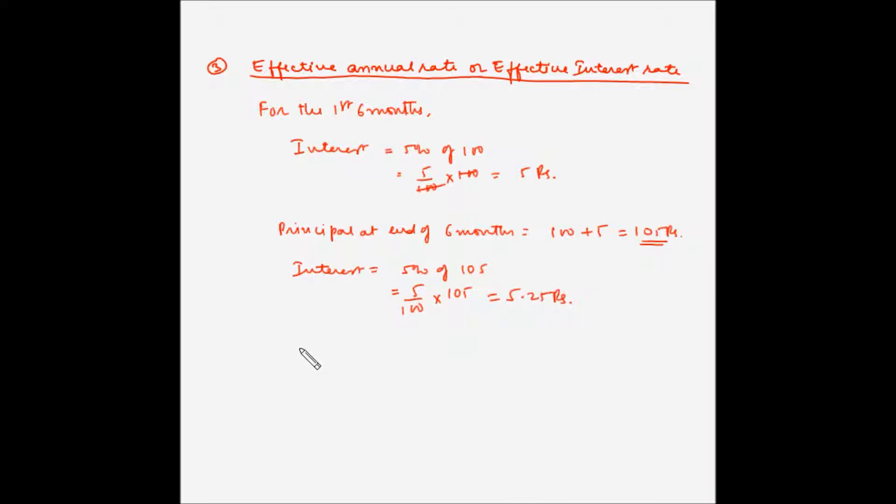So, at the end of 1 year, the total accumulation of interest will be equal to 5 which is this amount plus 5.25 which is this amount which is equal to 10.25 rupees. However, if interest were compounded annually,